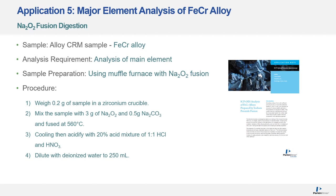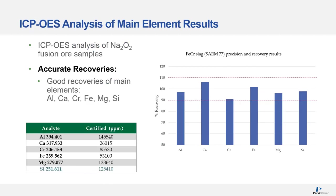In the final application, major elemental analysis of an iron-chromium alloy was performed using a sodium oxide fusion digestion, analyzed by ICP-OES. Recoveries were within plus or minus 10% for all main elements: aluminium, calcium, chromium, iron, magnesium, and silicon.